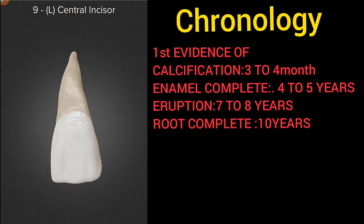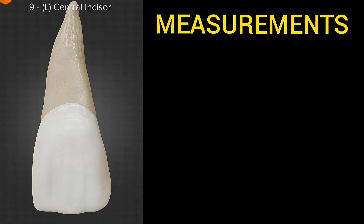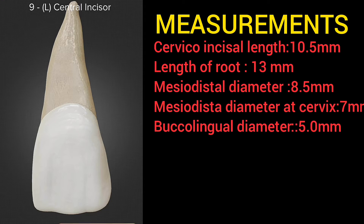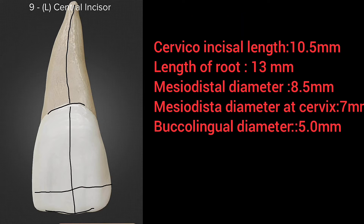Now let's see the measurements of this tooth. The cervico-incisal length of the crown is 10.5 mm, measured from the cervical line to the incisal edge. The length of the root is 13 mm, from the cervical line to the tip of the root. The mesio-distal diameter is 8.5 mm, and the mesio-distal diameter at the cervix is 7 mm.